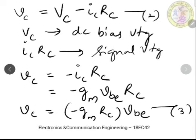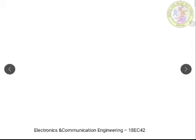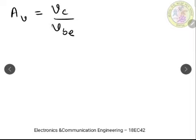So vc is nothing but the output voltage, and Vbe is nothing but the input. While taking the gain, we are taking the ratio of these two. Now let us define the voltage gain for this amplifier. Therefore, Av = vc / Vbe.